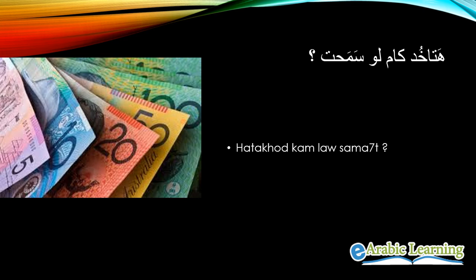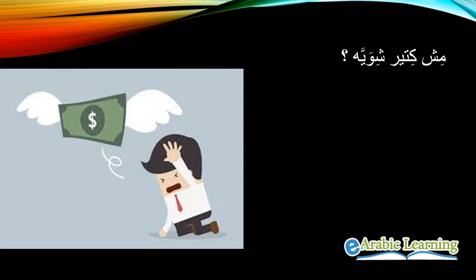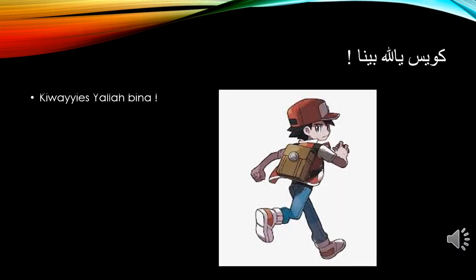If the price is too high for you, you can say it's expensive. In Egyptian dialect: 'mish kteer shwaya' — مش كتير شوية — meaning 'isn't it a little much?' 'Kteer' means 'much,' so 'mish kteer shwaya' means 'isn't it a little too much?' He might give you a discount or explain it's a long way.